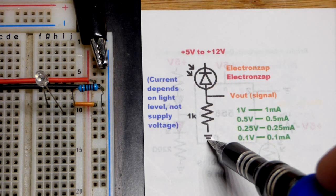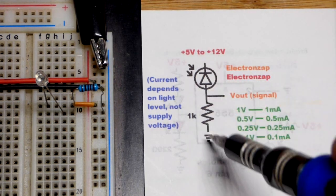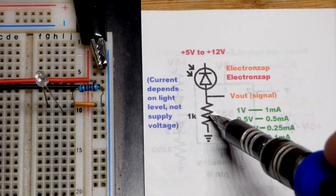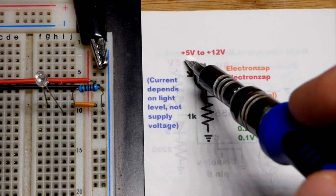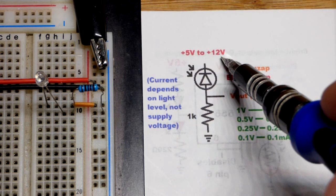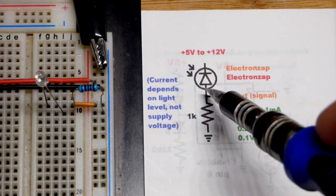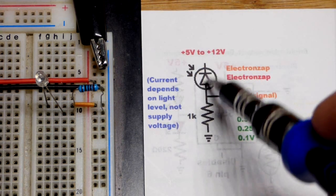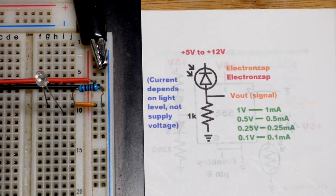Since these two components are in series, that means they both have the same amount of current flowing. The resistor will limit the maximum amount of current that can flow through the circuit based on the supply voltage. But otherwise the photodiode sets the current.